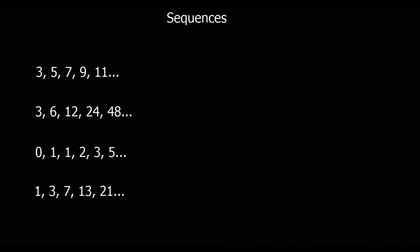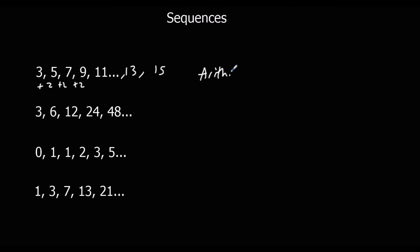Here we've got some different types of sequences — the different rules and ways of forming sequences you're going to see. This first one has 3, 5, 7, 9, 11. It's going up in twos every time, so the rule is plus two every time. The next term would be 11 + 2 = 13, then 13 + 2 = 15. These are called arithmetic sequences.